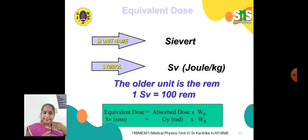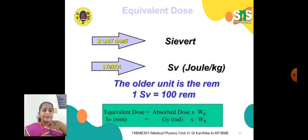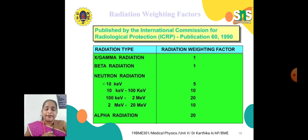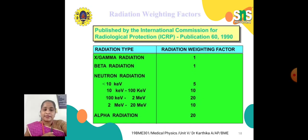The SI unit of equivalent dose is Sievert (Sv), in joules per kilogram; the older unit is rem. Equivalent dose equals absorbed dose (in Gray) multiplied by the radiation weighting factor (wr). Radiation weighting factors are: X-ray and gamma = 1, beta = 1, neutrons below 10 keV = 5, 10–100 keV = 10, 100 keV–2 MeV = 20, 2–20 MeV = 10, and alpha particles = 20.